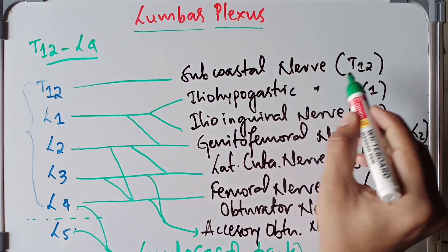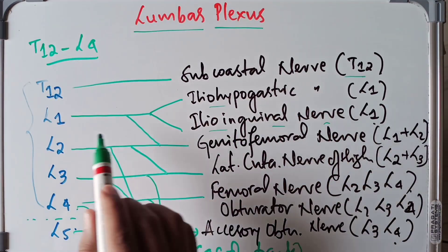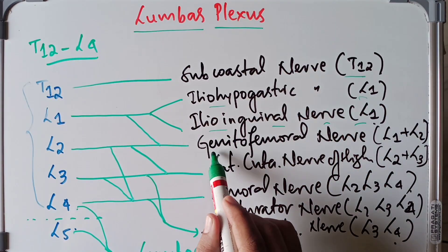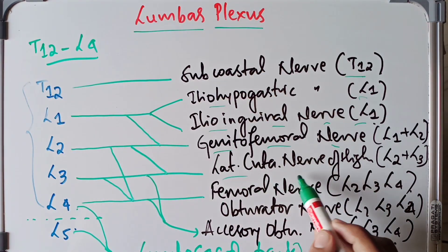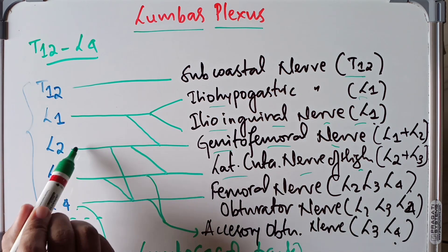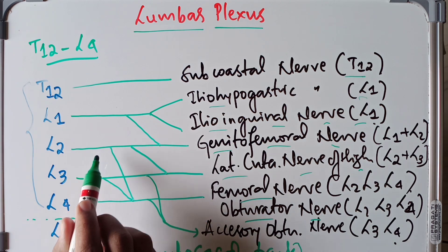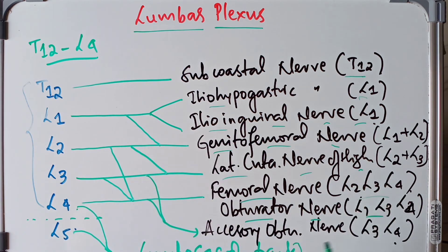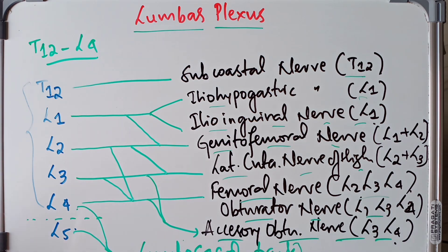The iliohypogastric and ilioinguinal nerves are both from L1. The genitofemoral nerve has root value from L1 and L2. The lateral cutaneous nerve of the thigh derives from L2 and L3. The femoral nerve and obturator nerve both derive from L2, L3, and L4. The accessory obturator nerve, not present in many individuals, derives from L3 and L4. Finally, L4 and L5 combine to form the lumbosacral trunk.